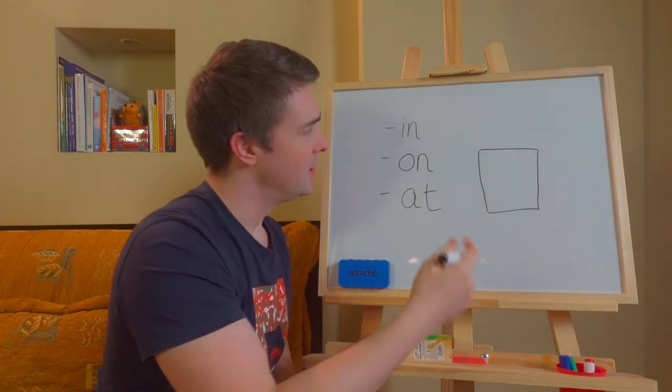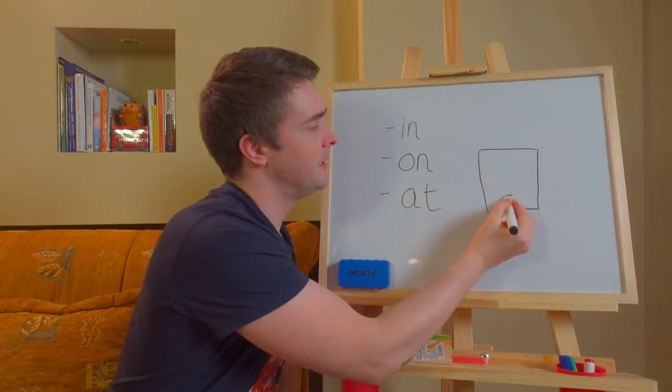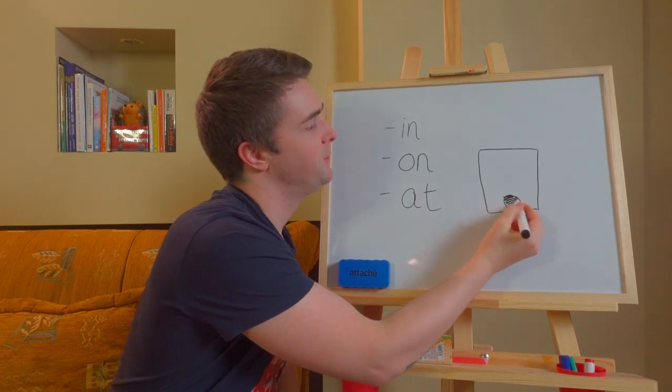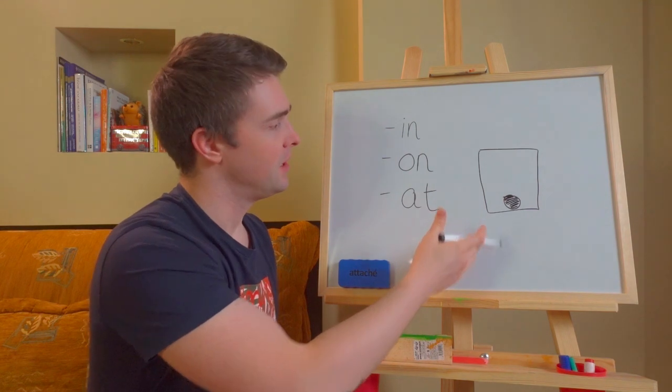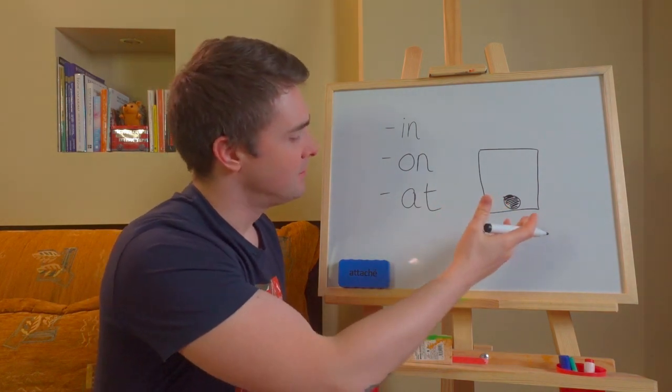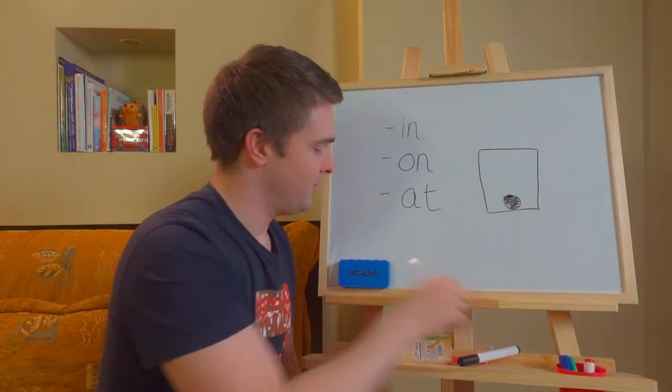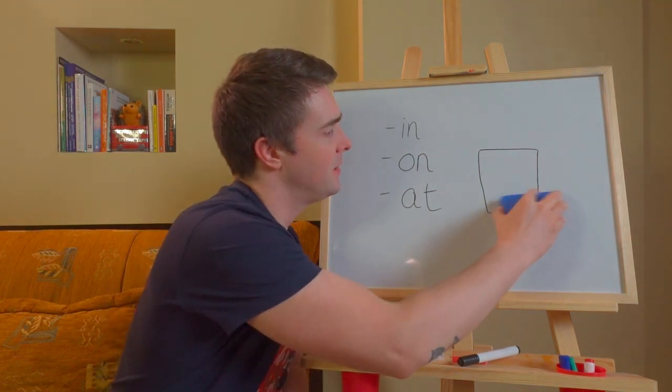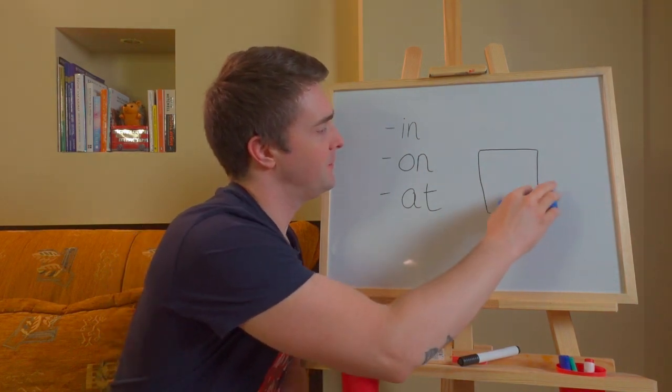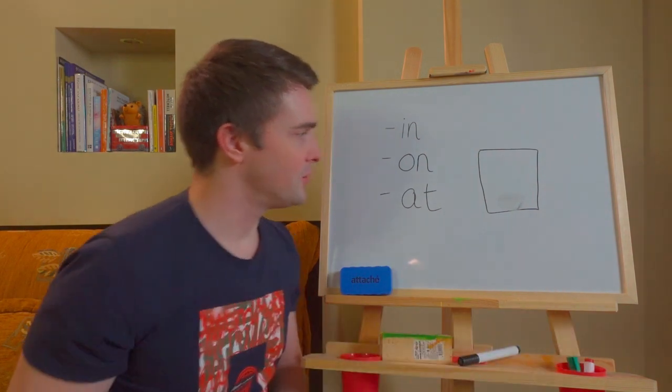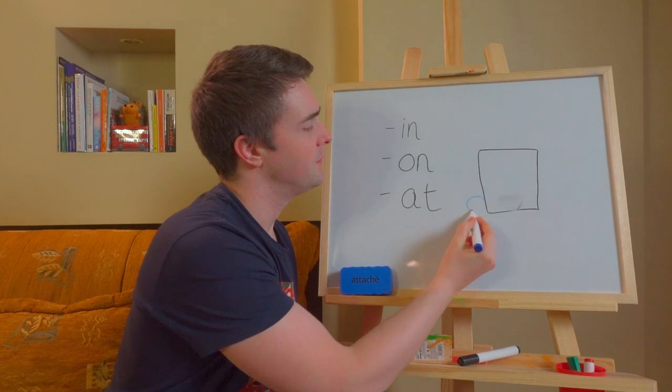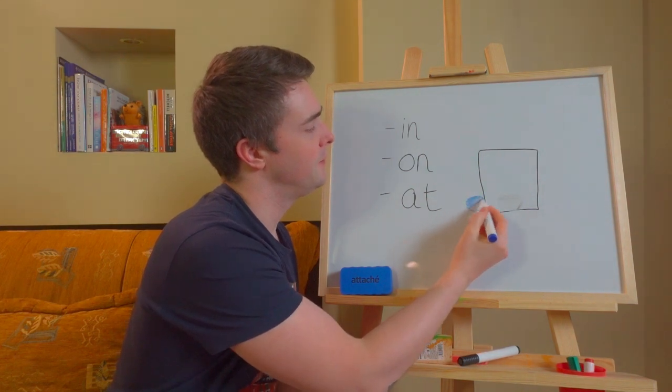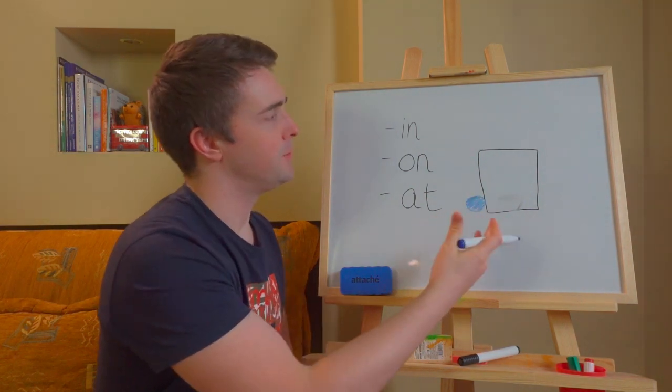Okay, so in would be here. We can say the ball is in the box. Whereas at, if it were at, the ball wouldn't be in the box. Well, here if we're talking about a box, really I would say by, it would be here. By the box.